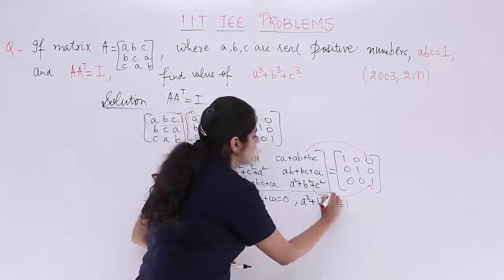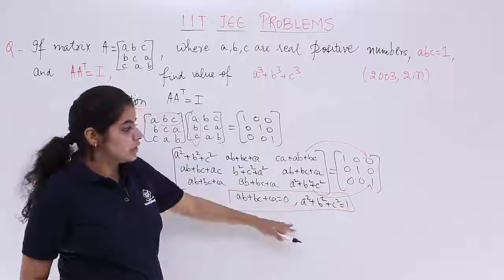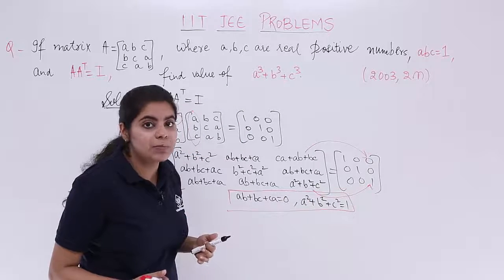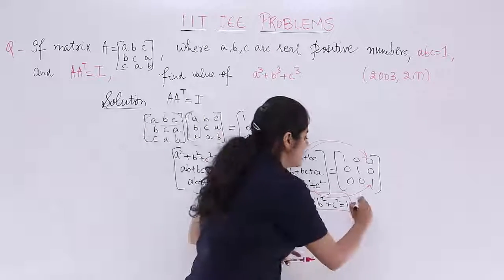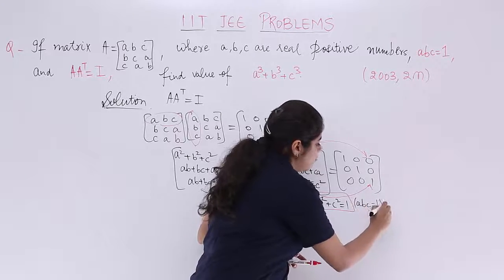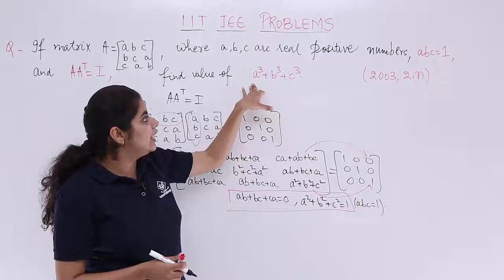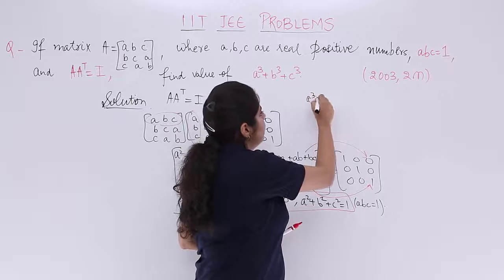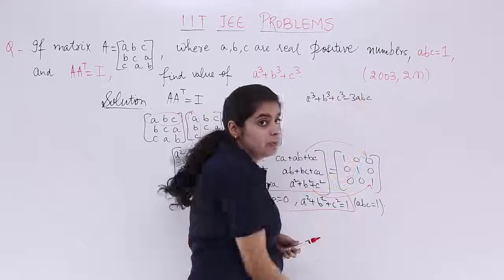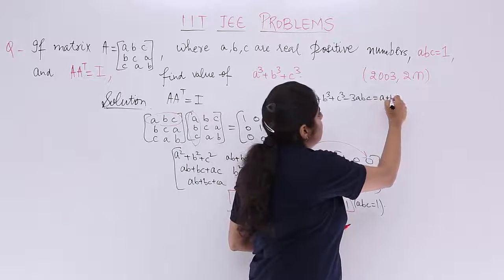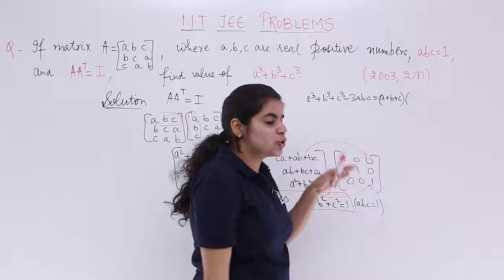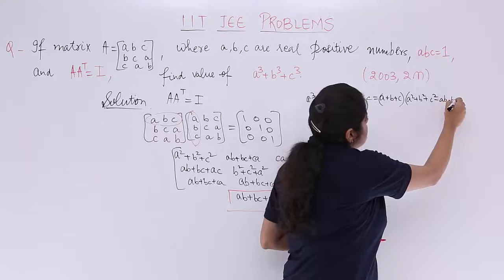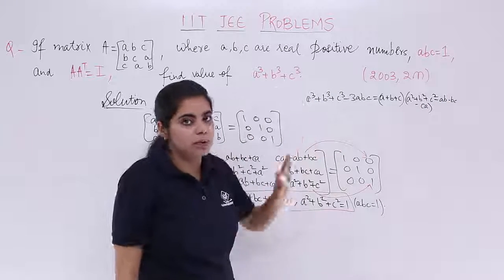Now we have all the needed conditions: AB + BC + CA = 0, A² + B² + C² = 1, and ABC = 1. Our task is to compute A³ + B³ + C³. Let's write down the formula: A³ + B³ + C³ − 3ABC = (A + B + C)(A² + B² + C² − AB − BC − CA). This is the formula we will use.